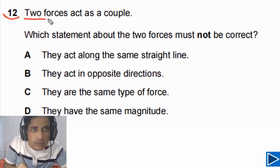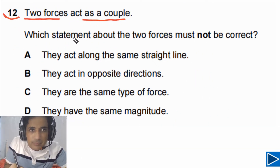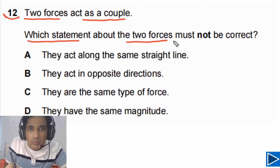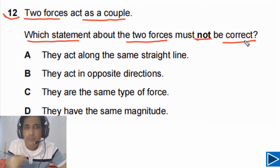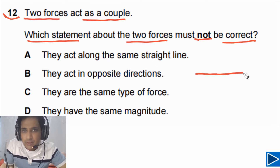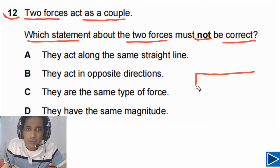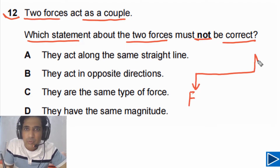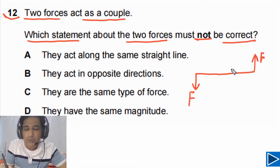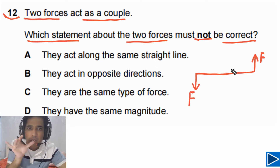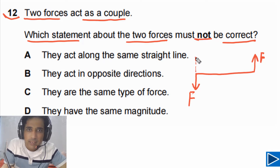For question number 12, it is given that two forces act as a couple. Which statement about the two forces must NOT be correct? First, let's understand what a couple is. When two forces form a couple, these two forces must be equal in magnitude, they must act in opposite directions, and they should not act along the same line — meaning the forces cannot be collinear. So acting along the same line is wrong for a couple.